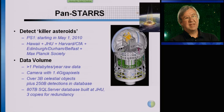PanSTARRS is one of our new projects. Its purpose is to detect killer asteroids, but the spin-offs include a whole bunch of cosmological objects — about 3 billion of them. The project has started and the expected data rate is about a petabyte a year — not quite LHC scale but very close to it — and the database will be about 80 terabytes per year.